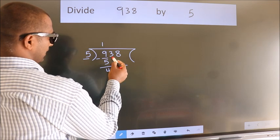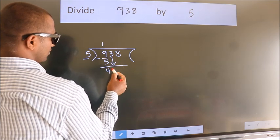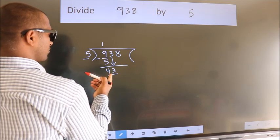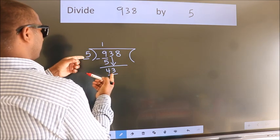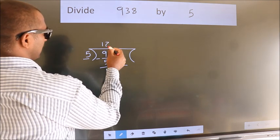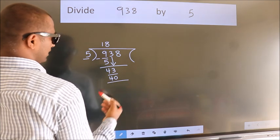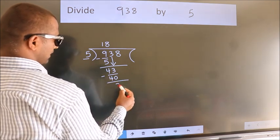After this, bring down the beside number. So, 3 down. So, 43. A number close to 43 in the 5 table is 5 times 8, which is 40. Now, we subtract. We get 3.